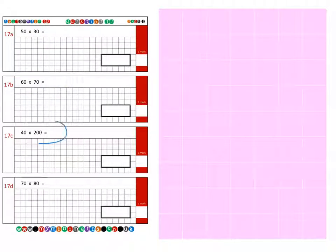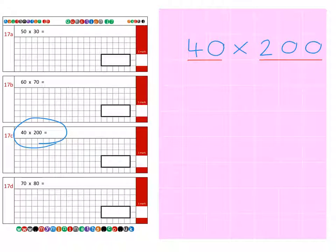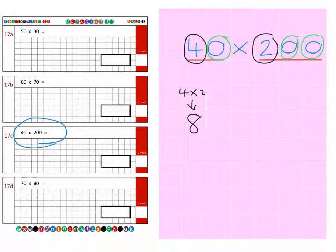And on to question 17c, which is 40 multiplied by 200. Now, this time, as you can see, we have a multiple of 10 and a multiple of 100. But it's exactly the same type of calculation. So what we need to do to begin with is we take the 4 and we take the 2, multiply them together to make the 8. And then we take 1, 0, 2, 0s and 3, 0s and place them on the end. And we get a final answer of 8,000.